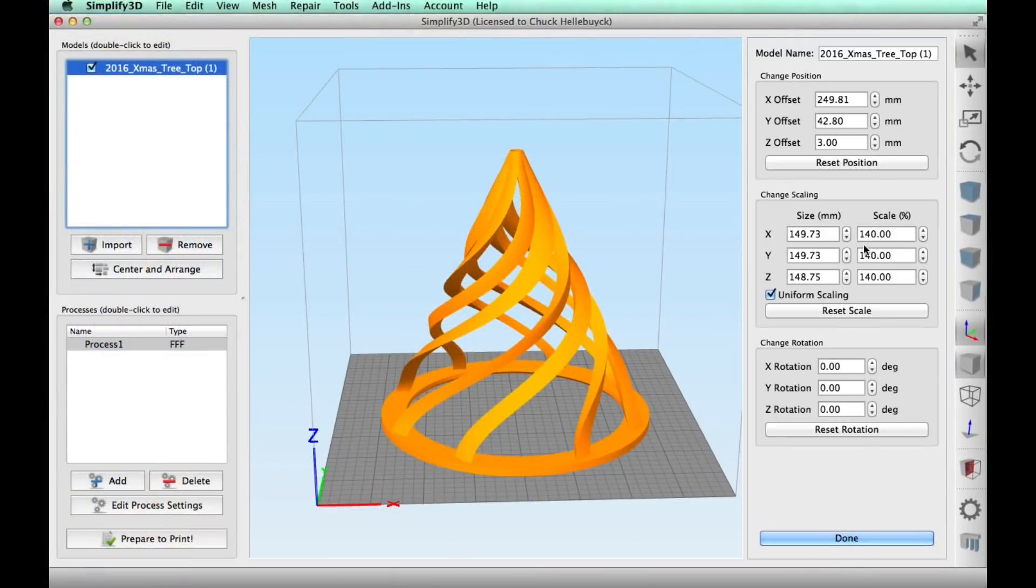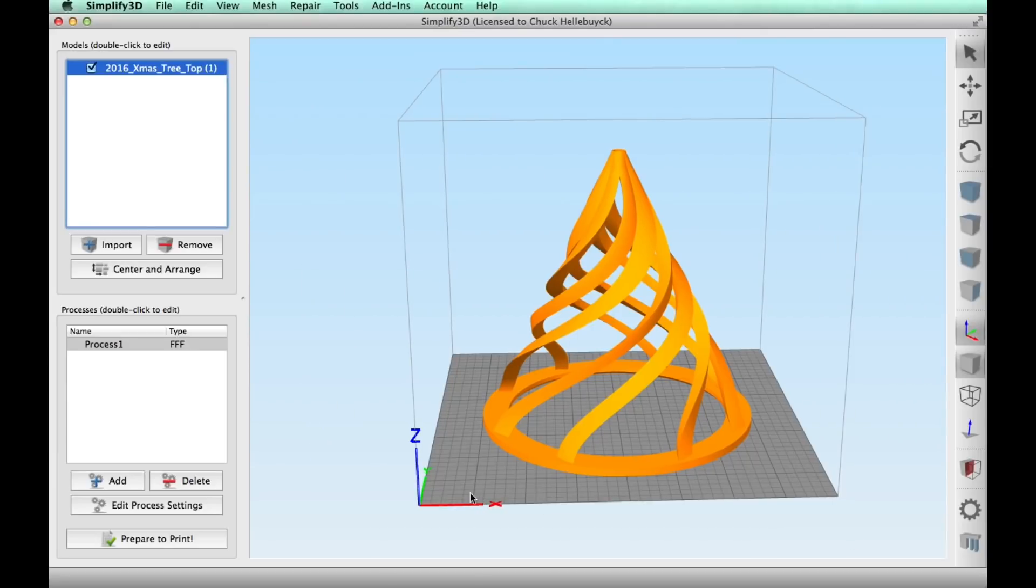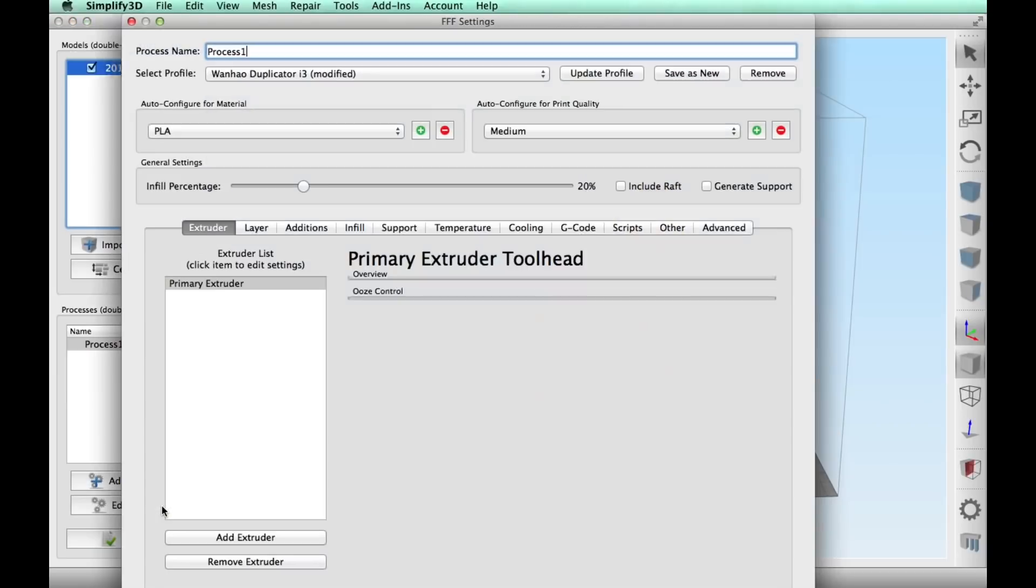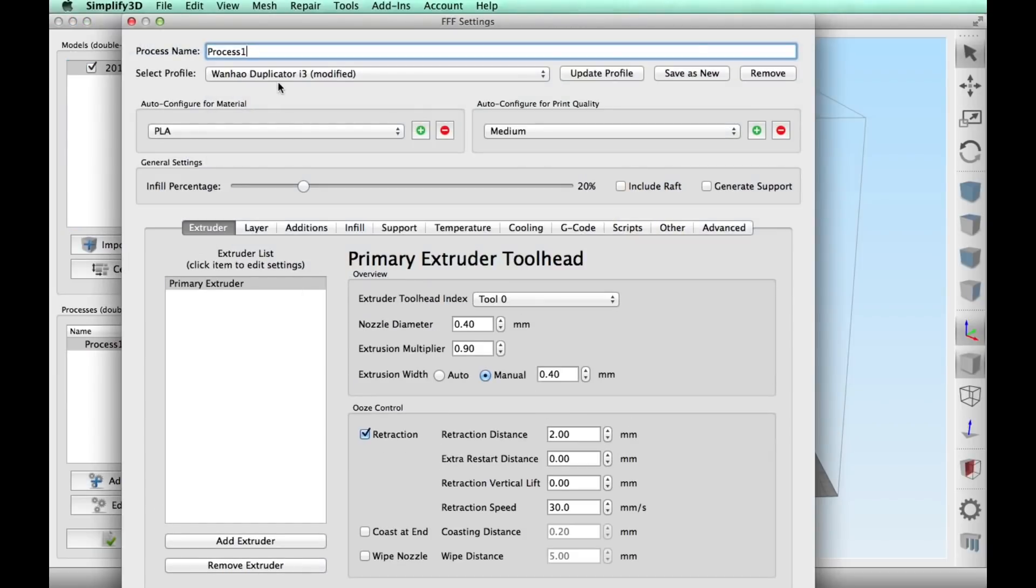I imported it to Simplify 3D and upsized it to 140 percent because I wanted it taller, just in case I wanted to put it on top of the 3D electronic Christmas tree. Then I clicked on edit process settings.